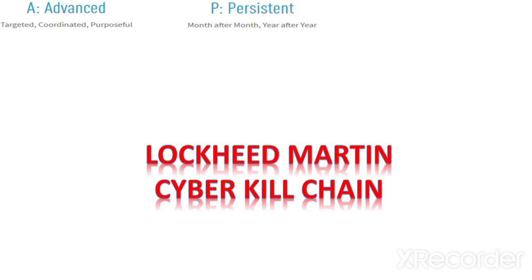The 'P' relates to persistence — if the threat persists over time. And the 'T' for Threat means the individual launching the cyber attack has a specific intention, is exploiting an opportunity to attack an organization, and has the capabilities to do so.